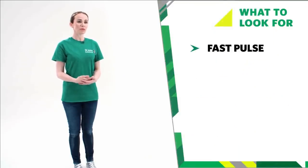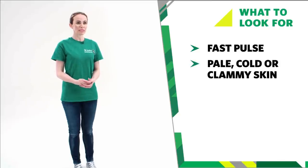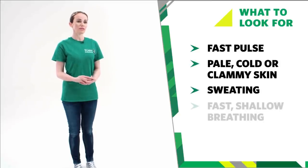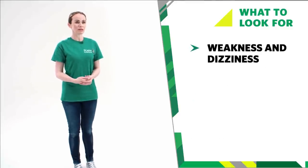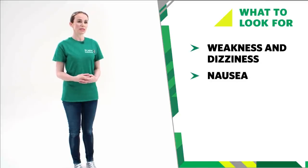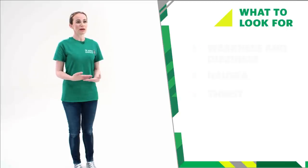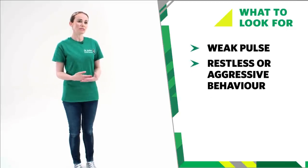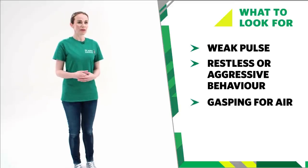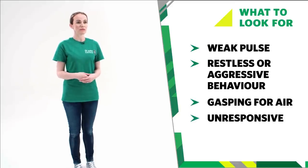These conditions may all lead to life-threatening shock. When someone is in shock, they may have: a fast pulse, pale, cold or clammy skin, sweating, fast shallow breathing, grey-blue skin especially inside the lips, weakness and dizziness, nausea and possible vomiting, and thirst. As the shock becomes more severe, they may have a weak pulse that you may not be able to feel, restless and aggressive behaviour, gasping for air, and they may become unresponsive.